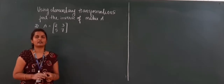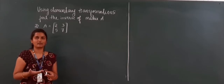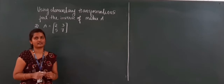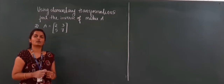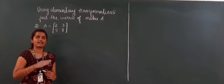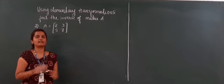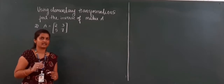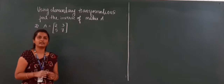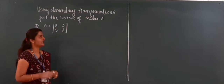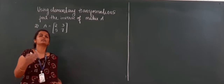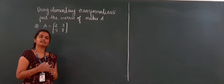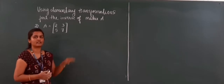In the last class we learned row operations — elementary operations or elementary transformations. There are totally three row transformations. First, we can interchange two rows: Ri changes to Rj. Second, we can multiply any non-zero element to any row: Ri changes to k·Ri. Third, we can add any row to another row by multiplying some non-zero element to one row: Ri changes to Ri + k·Rj. Using these three operations we will find the inverse of the matrix.